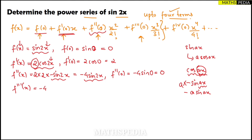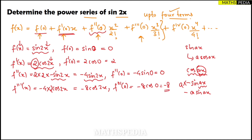Differentiating −4sin(2x): the constant −4 stays, and sin(2x) differentiates to 2cos(2x), giving f'''(x) = −8cos(2x). Substituting x = 0: f'''(0) = −8·cos(0) = −8·1 = −8. We have now found all the required terms.